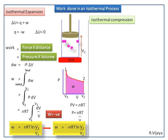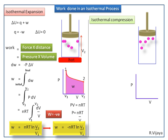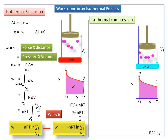Next, we see isothermal compression. Consider a cylinder having N number of ideal gas molecules with a weightless and frictionless piston. This is the PV diagram; this is the initial volume of gas inside the cylinder. When work is done on the system, the temperature increases. To maintain constant temperature, we keep a cold reservoir so the heat is released to it, maintaining the isothermal condition. Now we compress the system — the volume decreases from V1 to V2 and the pressure increases.